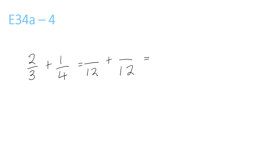3 and 4 both go into 12 again. 3 times 4 is 12. 4 times 3 is 12, so that means you have to times the top by 3. So 2 times 4 is 8, and 1 times 3 is 3. 8 plus 3 is 11 over 12.